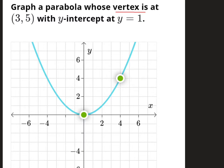So if I draw a rough sketch here, a vertex would be the turning point of the parabola, and the y-intercept is the point at which the graph cuts the y-axis, and here is the y-axis.